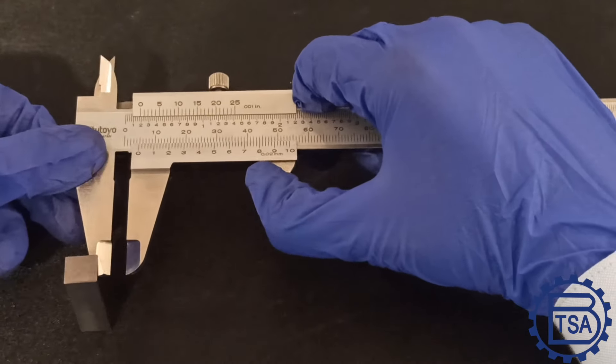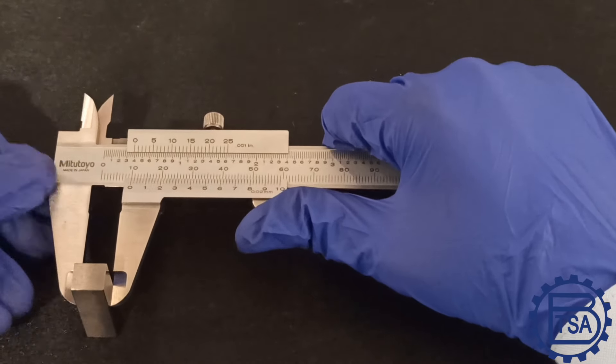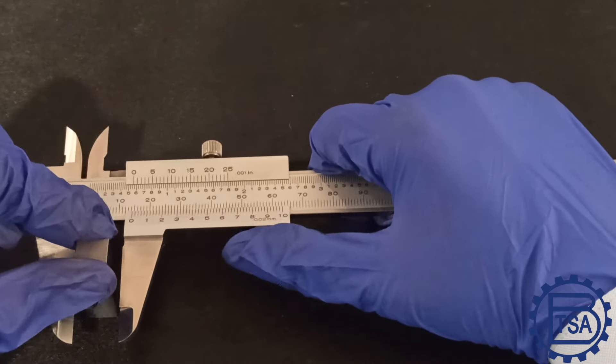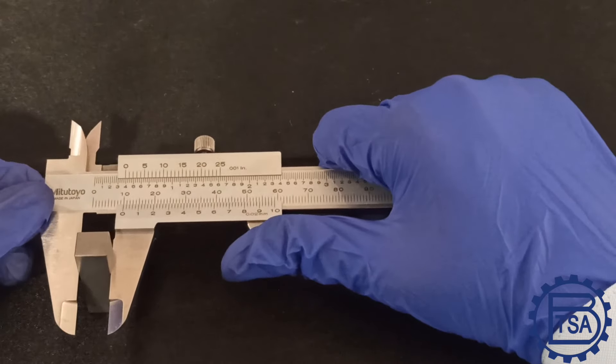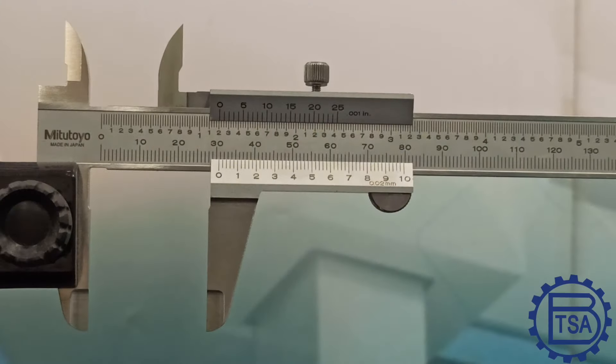Make sure that measurements are not taken on the edge of the jaws. Instead, take the measurement on the machined area and preferably on the top which will give better consistency, accuracy and repeatability.